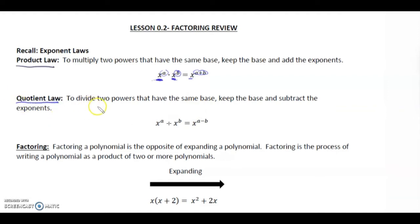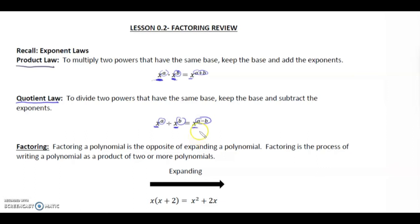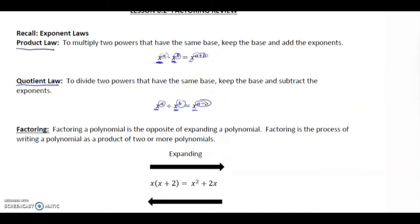The quotient law: when we divide two powers that have the same base — so again x and x, same base — what we do to the exponents is we keep the base and we subtract the exponents. These two laws are going to be very commonly used when we're doing factoring.